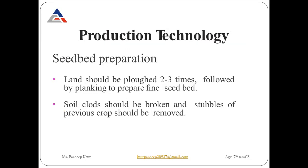Next is production technology. Fenugreek can be produced starting with seedbed preparation: land should be plowed 2–3 times followed by planking to prepare a fine seedbed. All clods in the seedbed should be broken, and stubbles of the previous crop must be removed, as they hinder germination of fenugreek seeds.